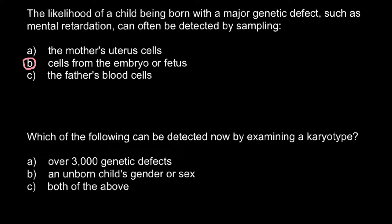The second question: Which of the following can be detected by examining a karyotype? Answer A — over 3,000 genetic defects; Answer B — an unborn child's gender or sex; and Answer C — both of the above. The correct answer would be B.